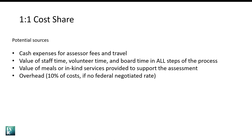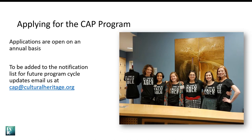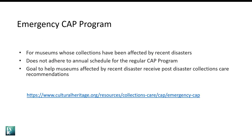Museums accepted into the program will also have an orientation webinar where we talk more about the cost share in greater detail. We will have forms and trackers for museums to complete that will help them keep track of this. Applications are currently closed for the CAP 2023 program cycle. If you would like to be added to our notification list for updates on future program cycles, please send us an email at CAP at culturalheritage.org.